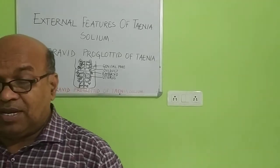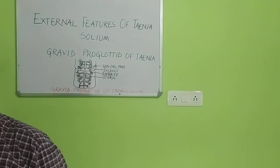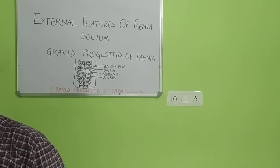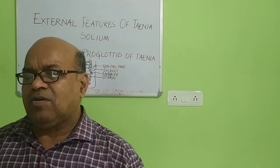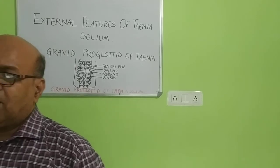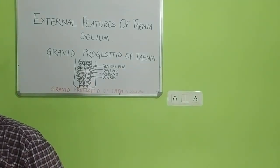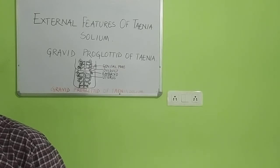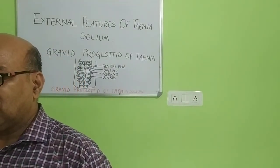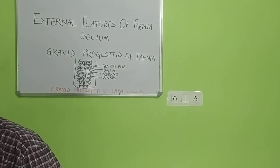As I stated before, Taenia solium is one bisexual organism, or what should be called hermaphrodite — that means it is monoecious. Both male and female sex organs are seen in the same organism. In each segment you find the male reproductive system, and side by side you also find the female reproductive system. The male reproductive system generally synthesizes gametes like sperm, and the female reproductive system generally synthesizes the ovum. The union of gametes — sperm and ovum — is the process of fertilization.